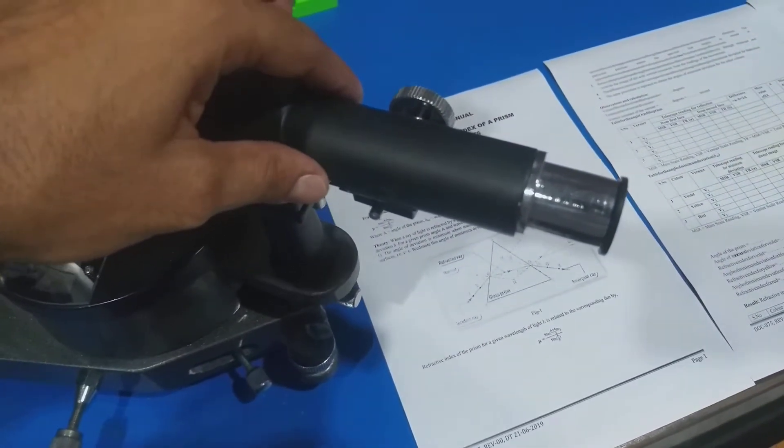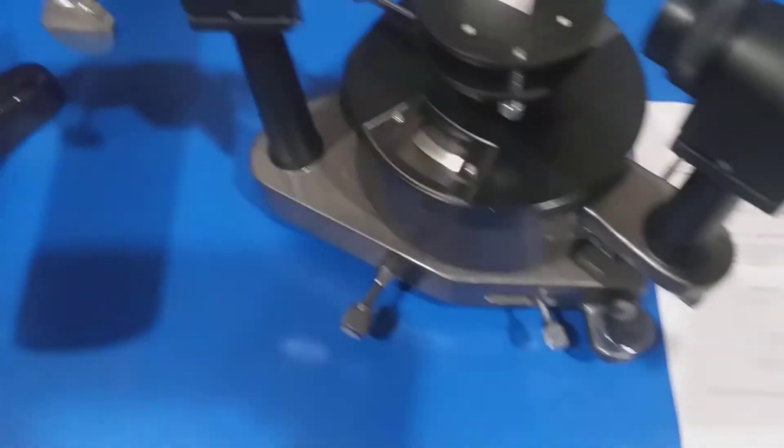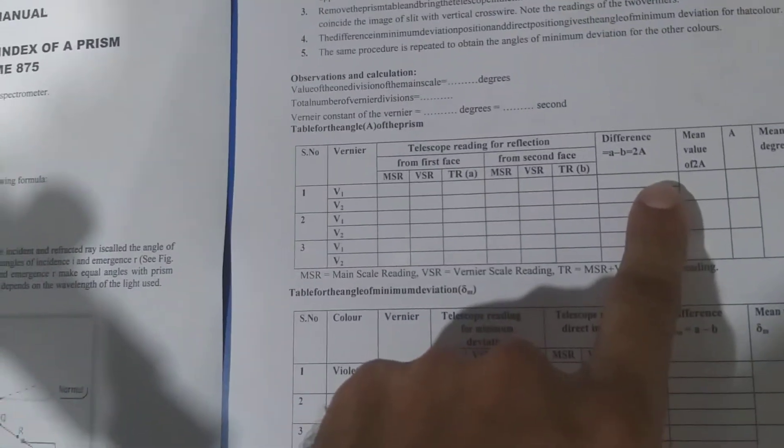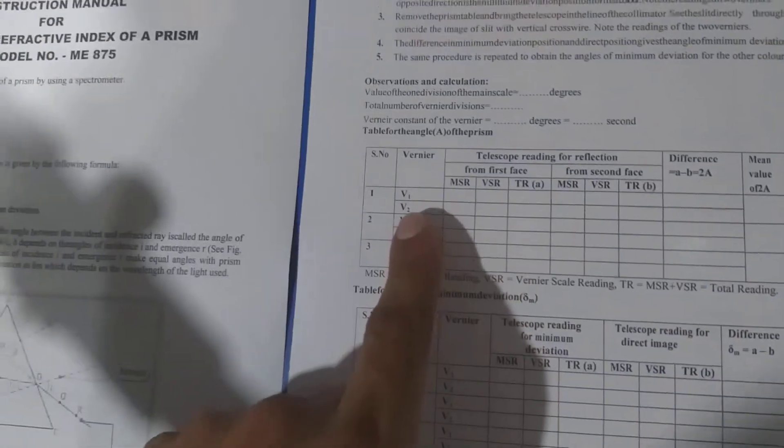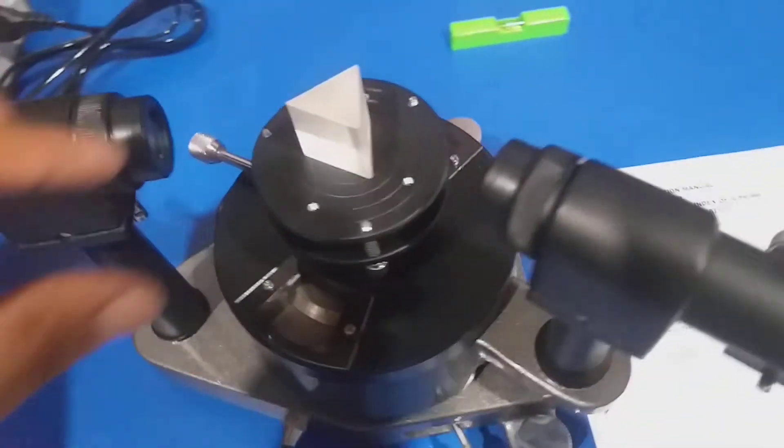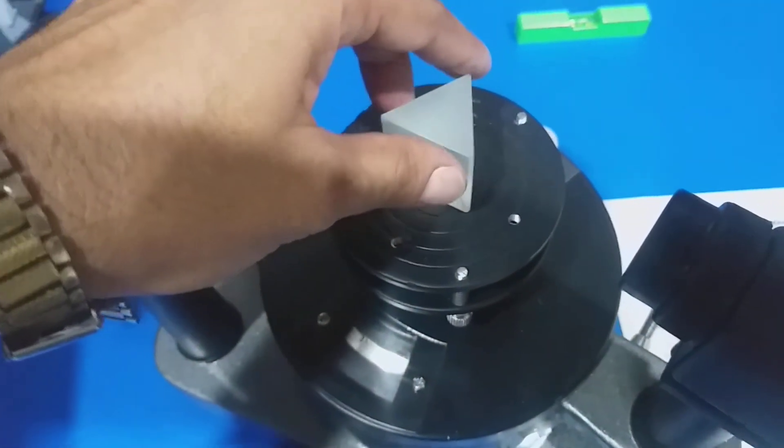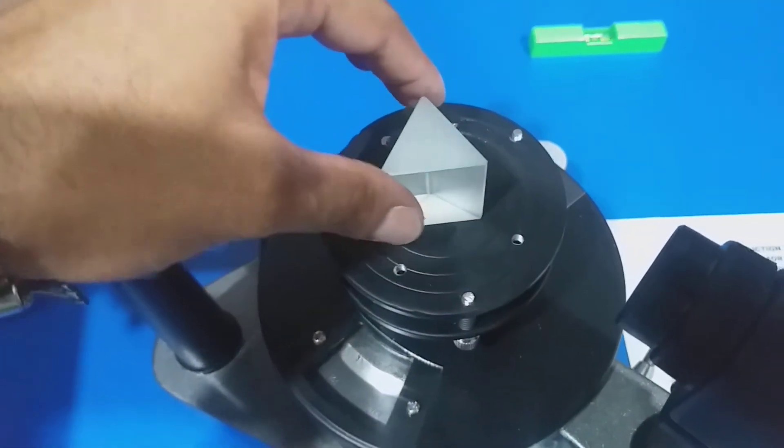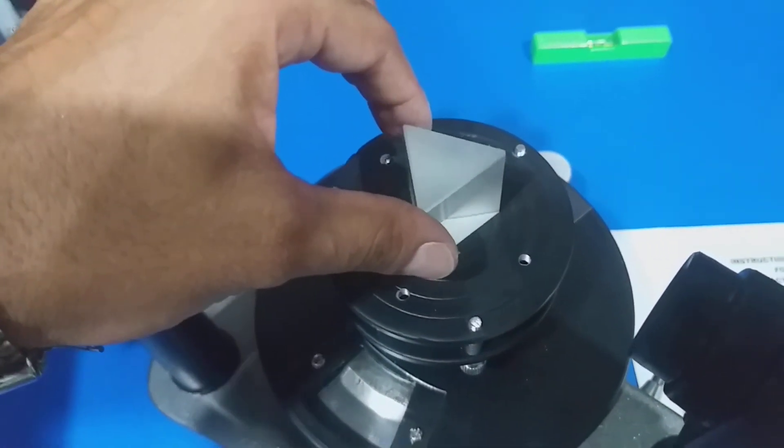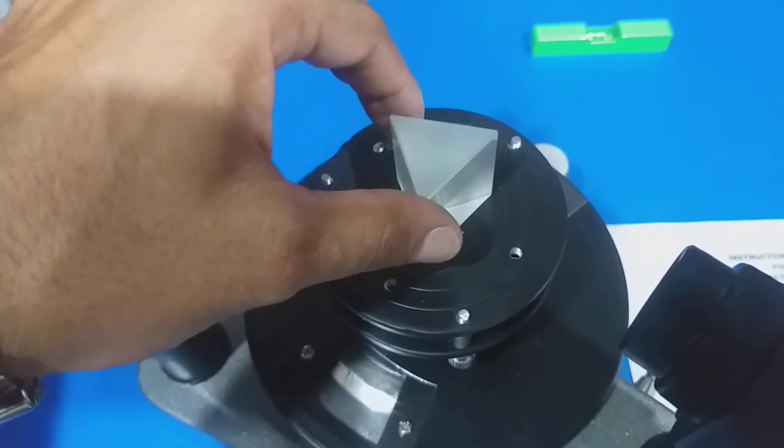We take the reading of both the vernier v1 and v2 at both the faces and calculate the value of angle of prism. We repeat this process two or three times. Now we arrange the prism in a minimum deviation position.